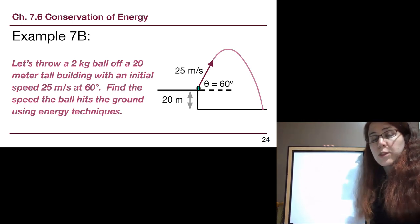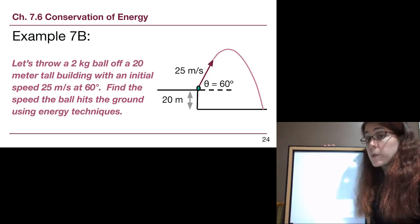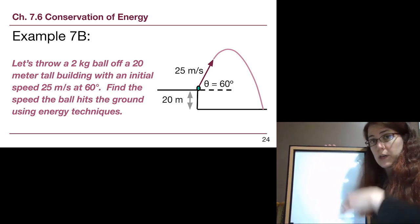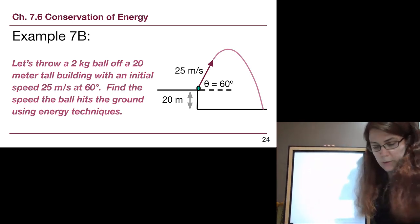So for example, we can throw a two kilogram ball off a 20 meter tall building with an initial speed of 25 meters per second at a 60 degree angle. We want to find the speed the ball hits the ground using energy techniques. Notice we're going to ask about the speed because we could not ask about the velocity. We won't be able to know at the end of the problem what angle the ball hits the ground with, but at least we'll know how fast it's going.